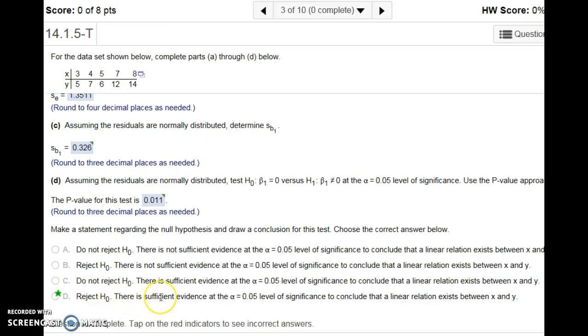There's sufficient evidence to conclude that a linear relationship exists because our null hypothesis was that the slope is zero, which means no linear relationship. A slope of zero would be a horizontal line.